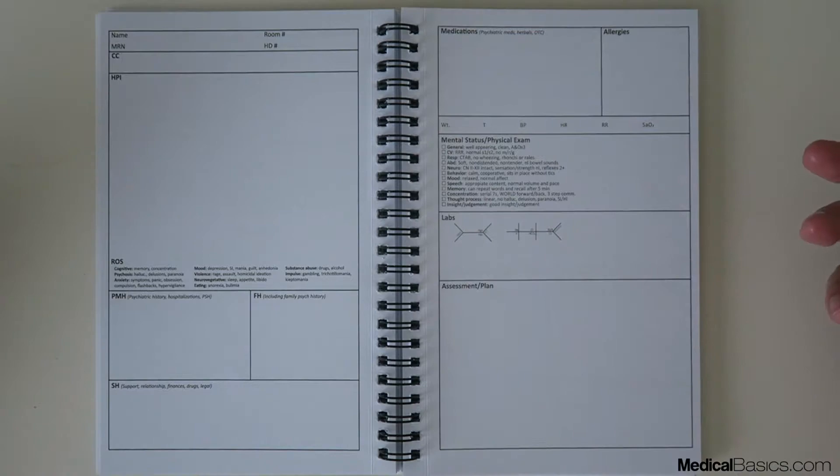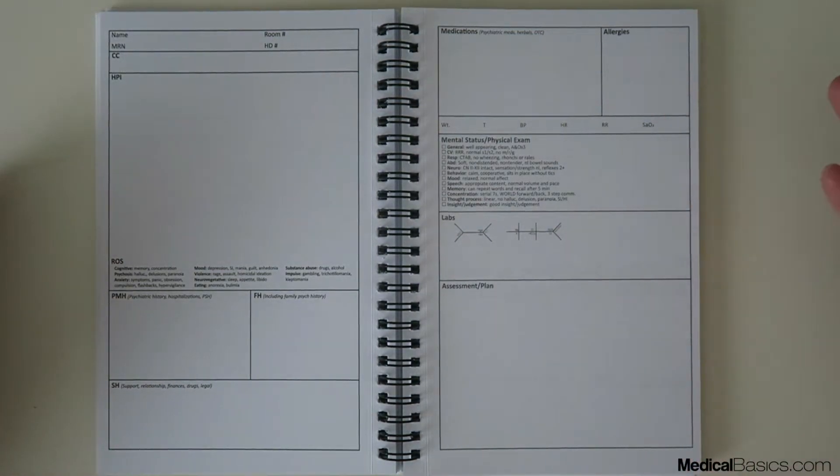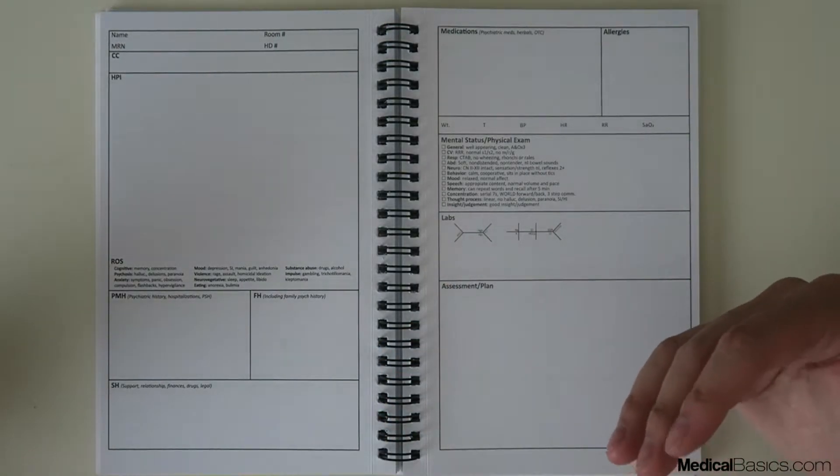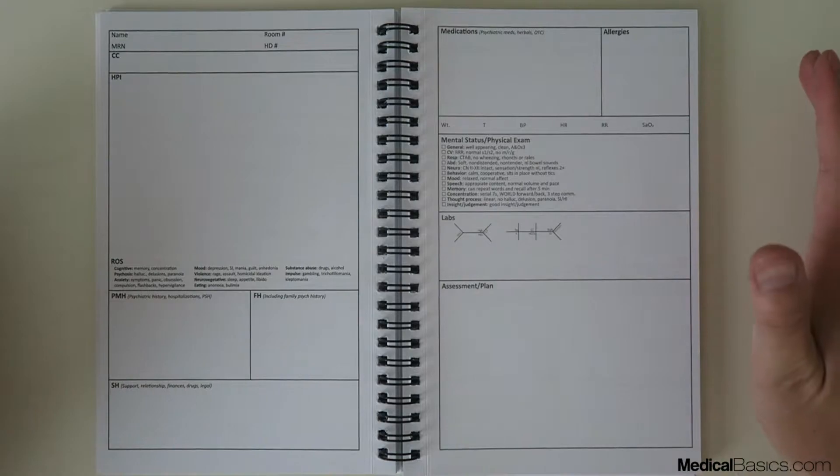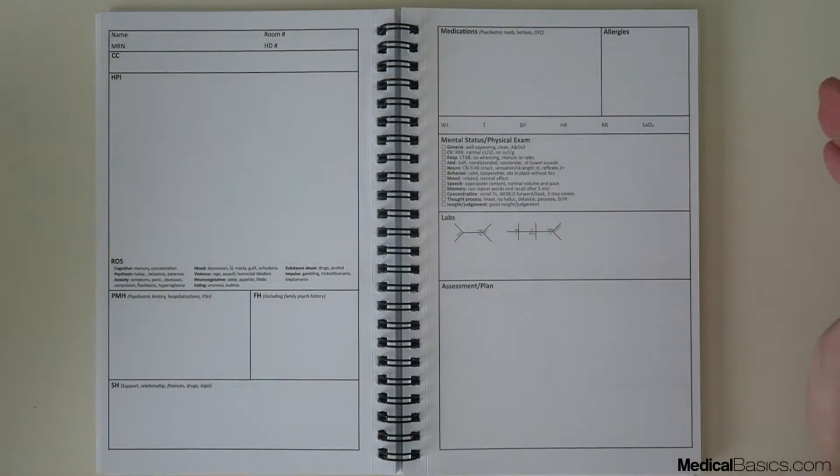It can be used both in the outpatient setting or in the inpatient setting. It doesn't have a progress template. It's just a two-page template that's really for the admission setting and it's going to look very similar to our other H&P notebooks, however the main differences are going to be in a few things.